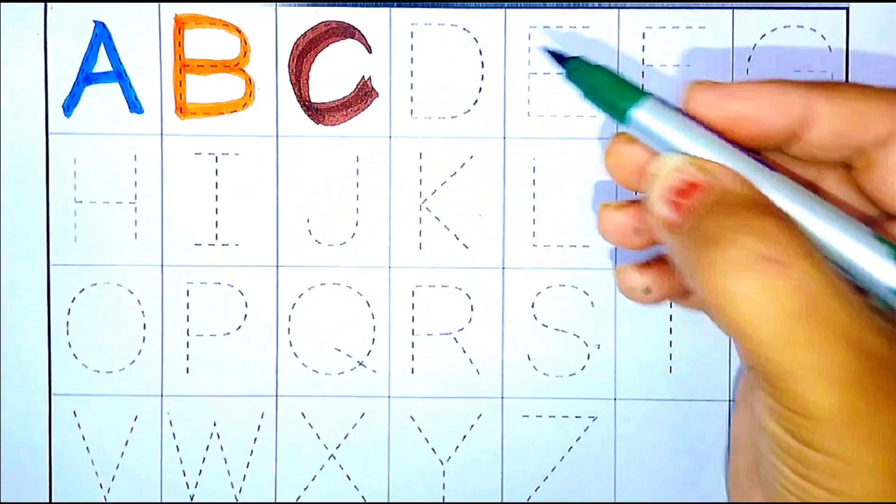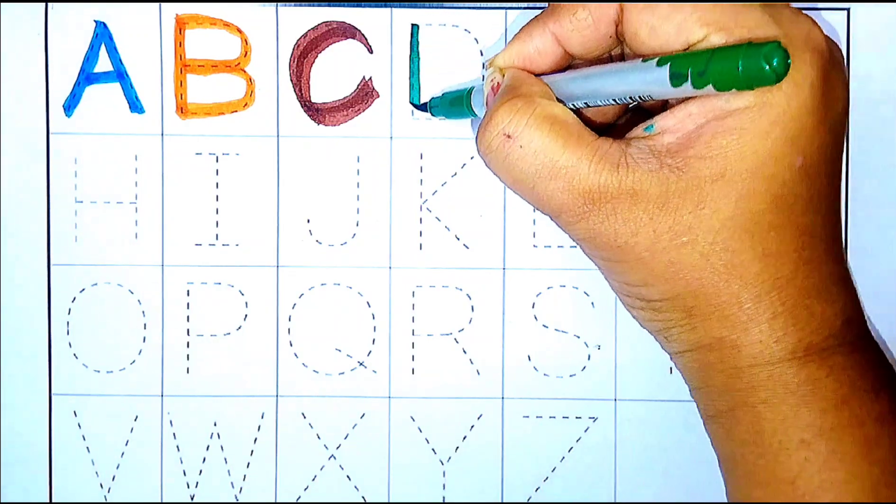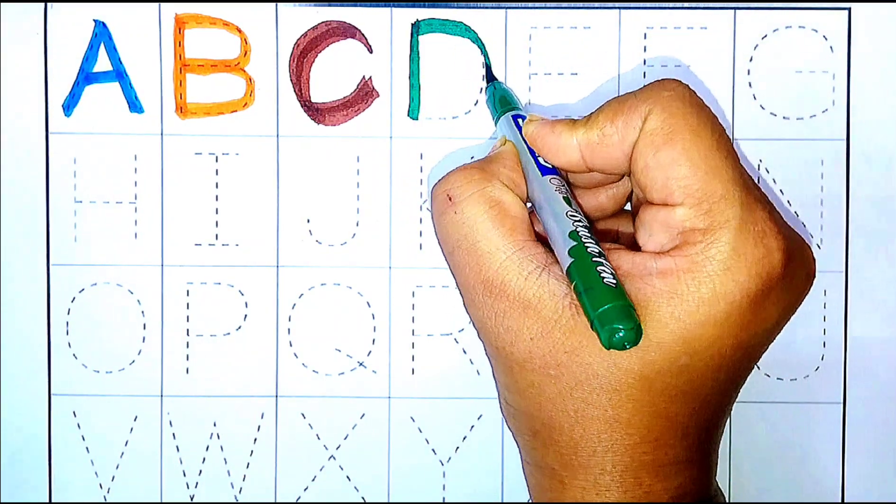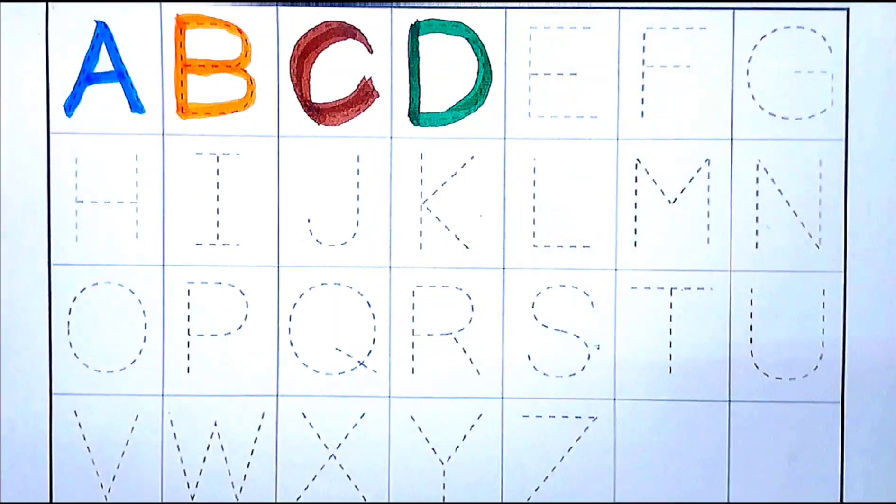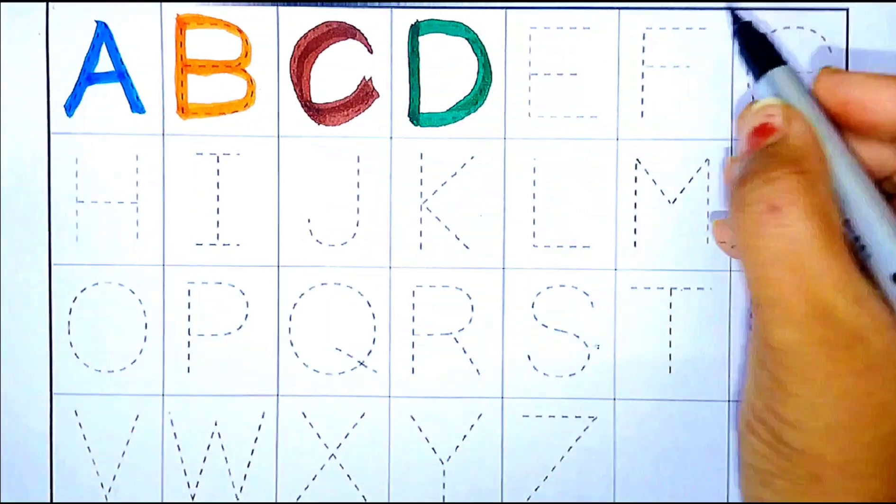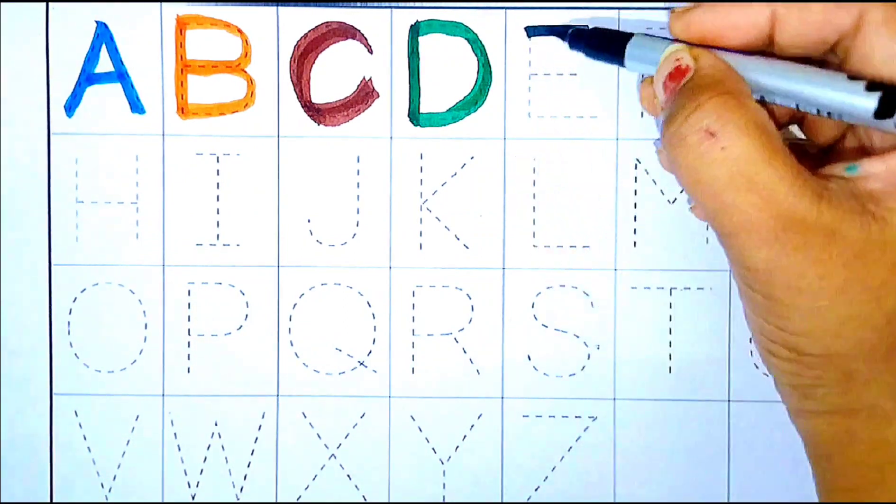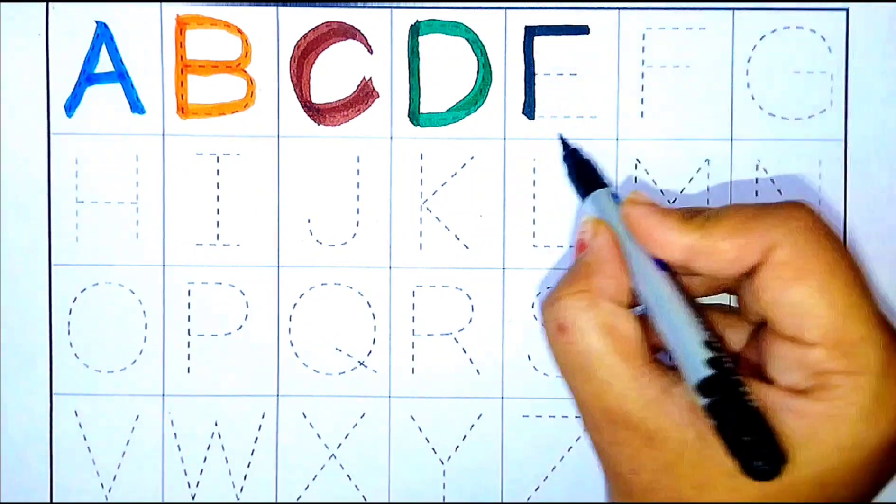Green color. D, D for dog. Black color. E, E for elephant.